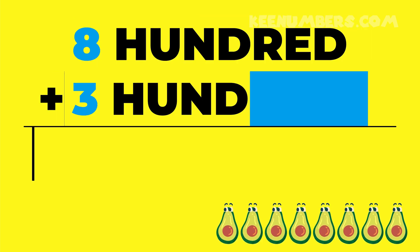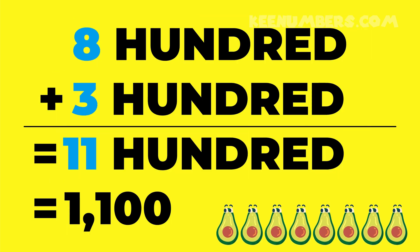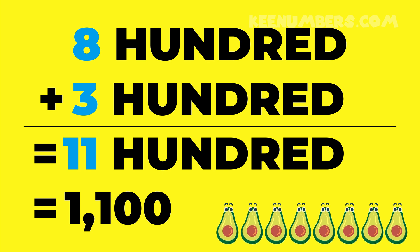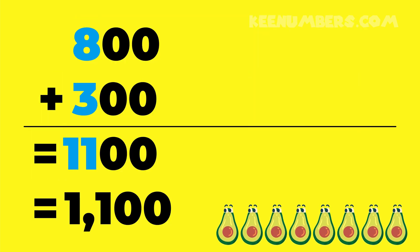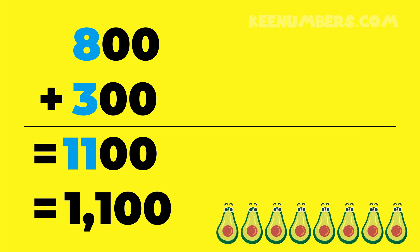Likewise, 800 plus 300 is 1100, because 8 plus 3 is equal to 11. So that's 1100, because 8 plus 3 is equal to 11. So 800 plus 300 is equal to 1100.